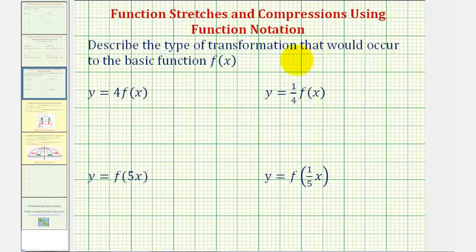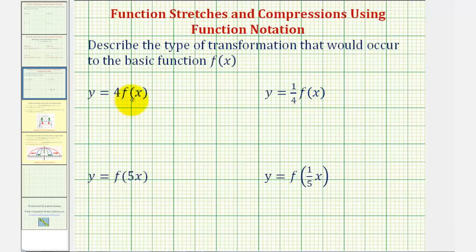We want to describe the type of transformation that would occur to the basic function f of x. Our first two functions are y equals four times f of x and y equals one-fourth times f of x. Notice in these two, we're multiplying the function values by a constant, and the function values are the y values. So we're multiplying the y values by a constant, and we'll either vertically stretch or vertically compress the function.